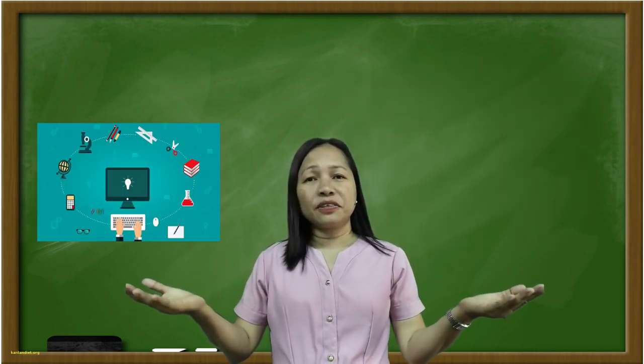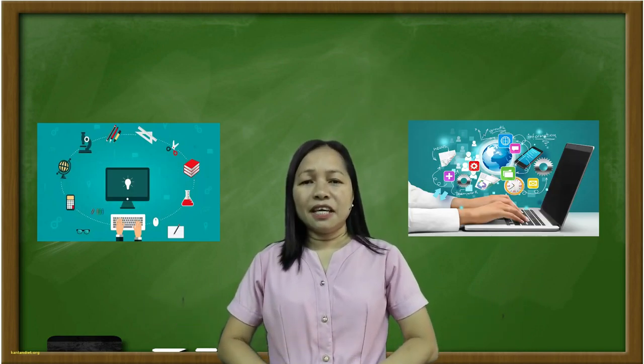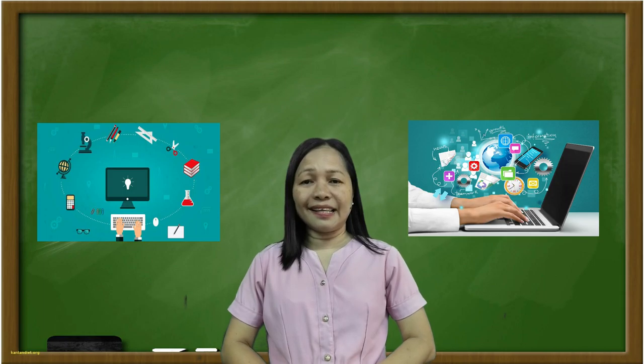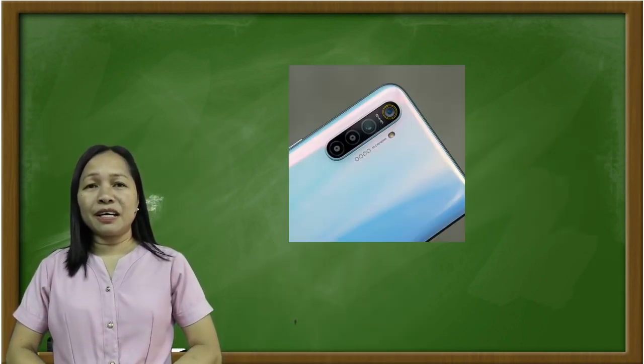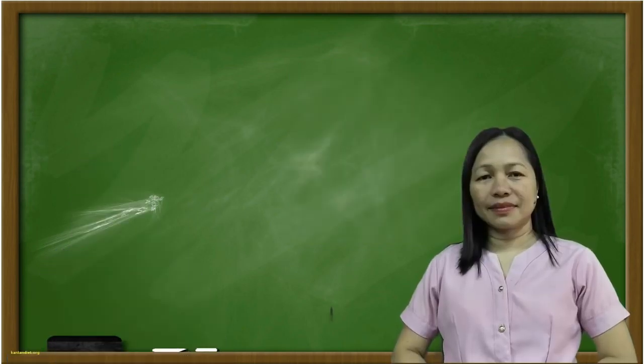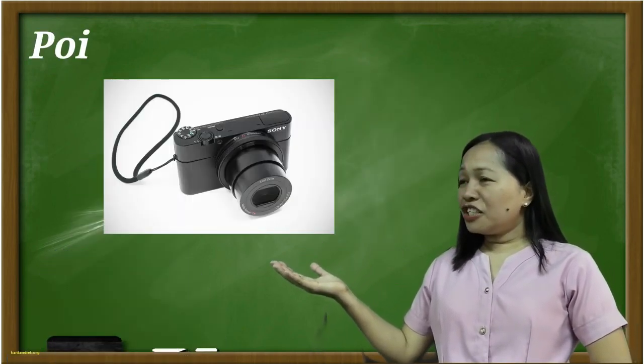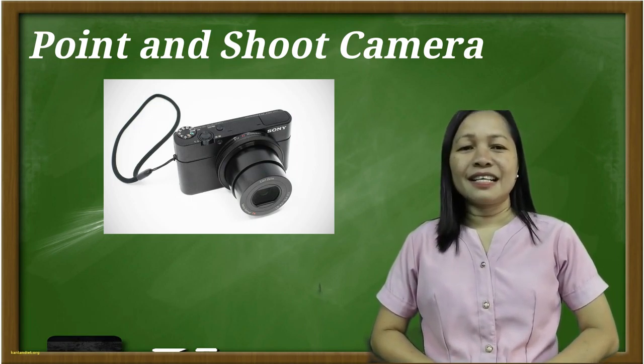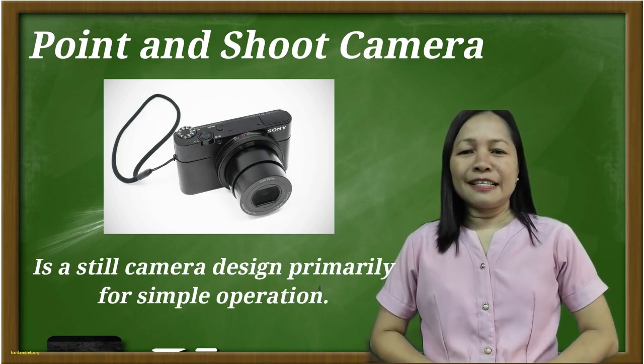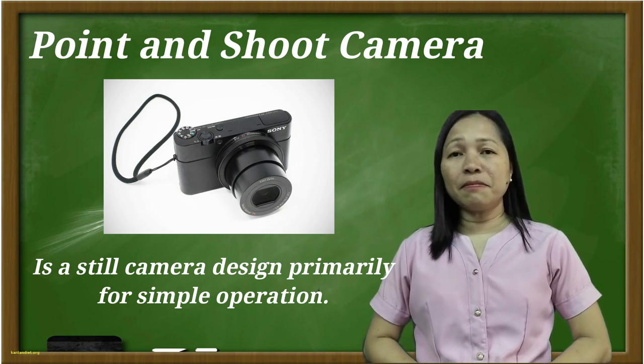Thanks to the growth of technology, taking pictures have become easy and handy. Mobile phones now are equipped with a camera. A point-and-shoot camera, also known as compact camera, is a still camera designed primarily for simple operation.